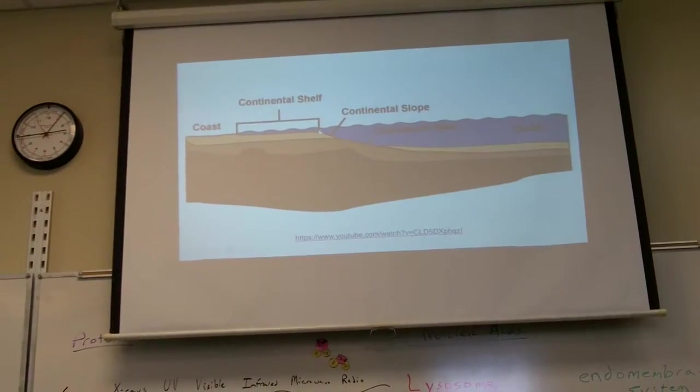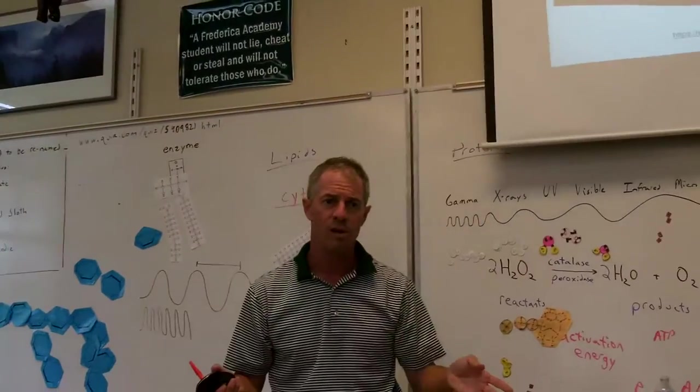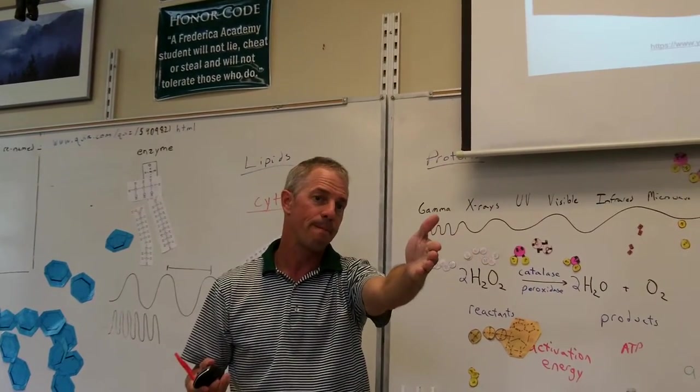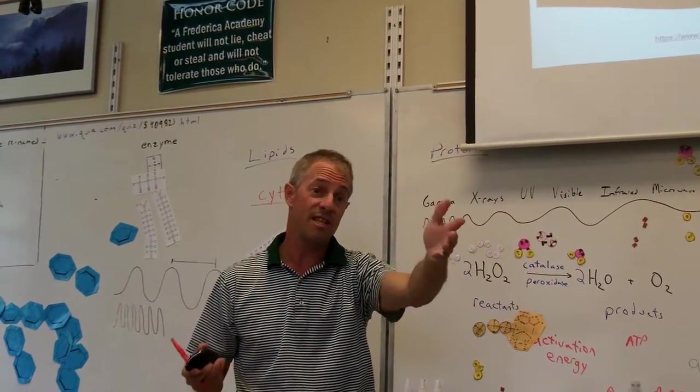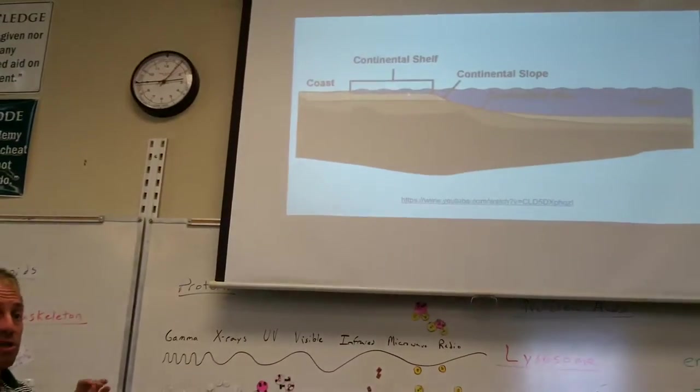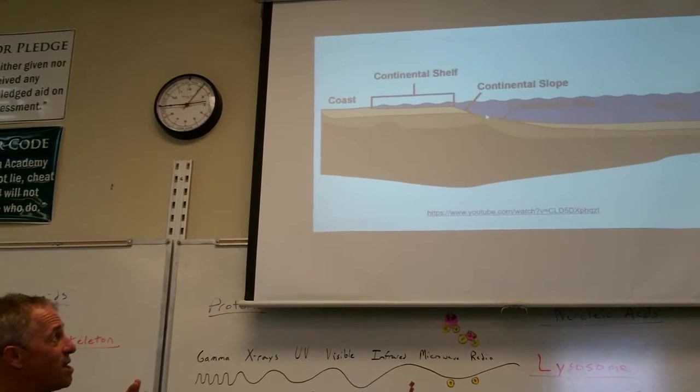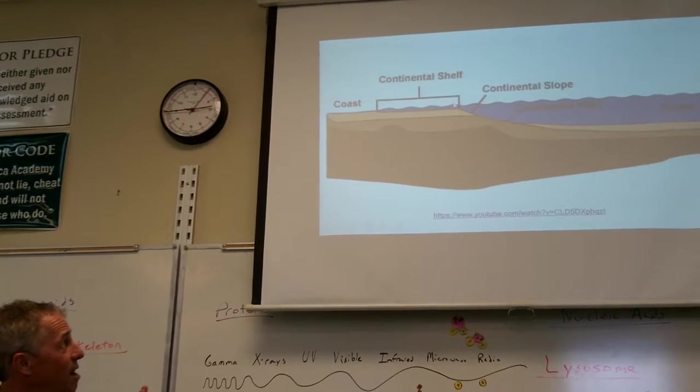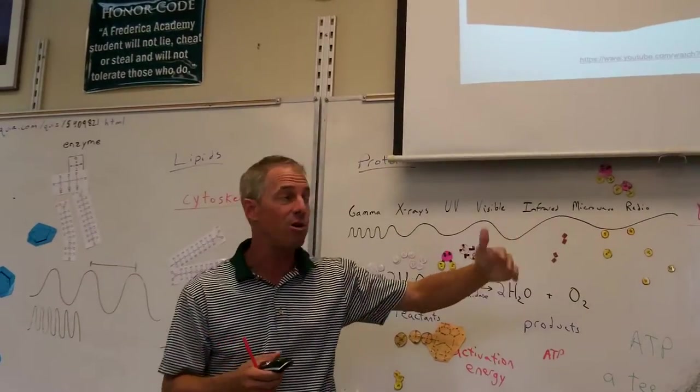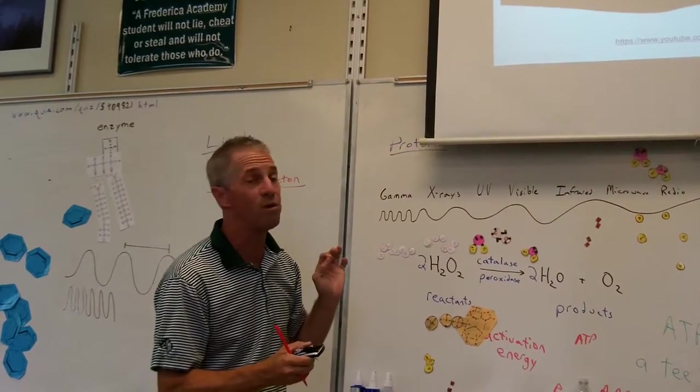It's a gradual slope going from where we are on the beach out to the edge of the continental shelf. Any deep-seated fishermen in here? Sometimes. You ever go down out to the Gulf Stream? About how far is that? It's about like 50 miles. 50, 60, 70 miles. That's all continental shelf you're over. Where we are, the continental shelf is real wide.